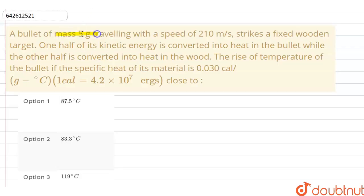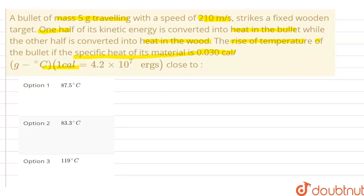mass 5 gram traveling with a speed of 210 meter per second strikes a fixed wooden target. One half of its kinetic energy is converted into heat in the bullet while the other half is converted into heat in the wood. The rise in temperature of the bullet if the specific heat of its material is 0.030 calorie per gram per degree celsius.